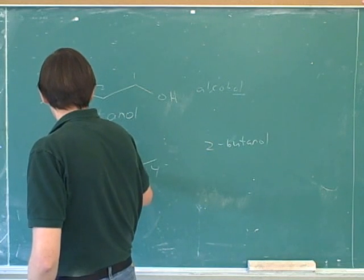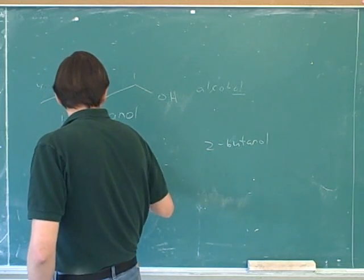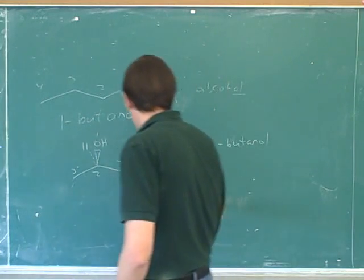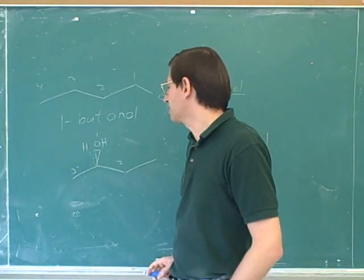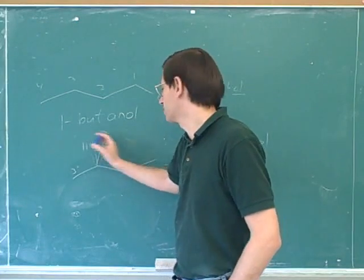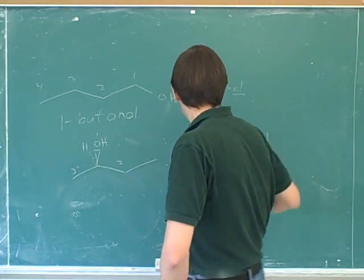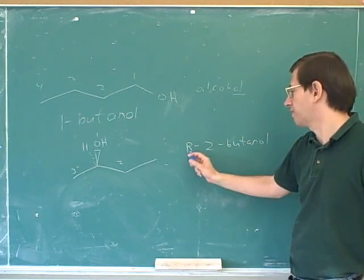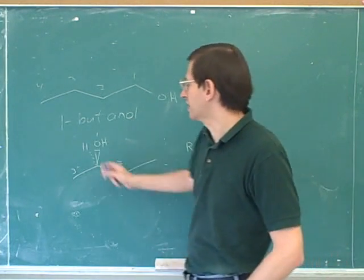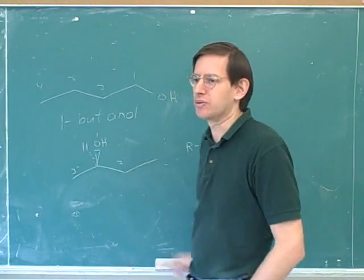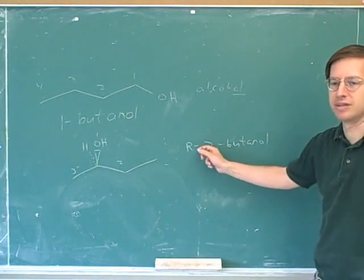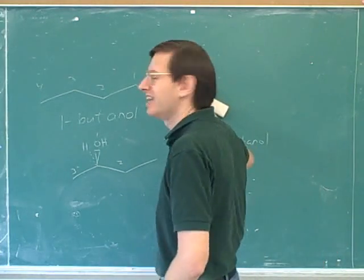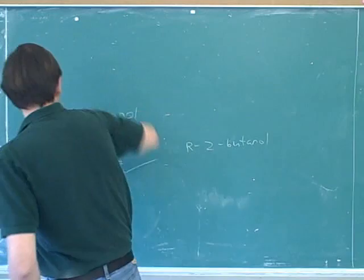So here's the number one, two, and three priorities. I have to get it computed with my numbers. This is easier because the number four is already pointing away from us. So this is clockwise. R-2-butanol. All right. A lot of students lose points on nomenclature because they forget to put in the stereochemistry. But there was a big clue here because they used the wedges and the dashes. So you should definitely remember to put in the stereochemistry.